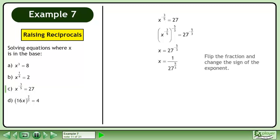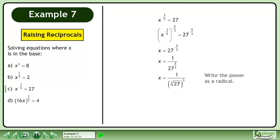Flip the fraction and change the sign of the exponent. Write the power as a radical. The cube root of 27 is 3. The answer is x equals 1 over 243.